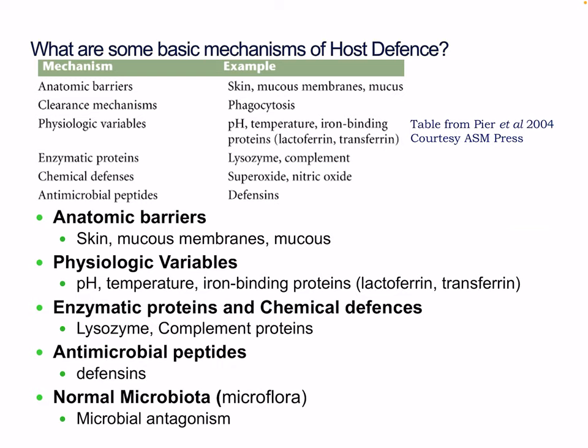The basic mechanism of host defense. First, we have our anatomic barriers, which include our skin, mucus membranes, and mucus — in our airways, intestines, and even our urinary tract, including the urethra and ureters. We also have clearance mechanisms like phagocytosis, which involves cells destroying pathogens.